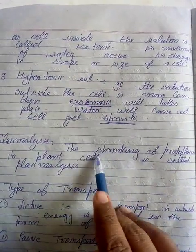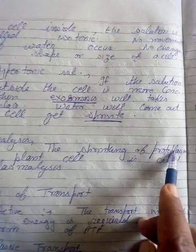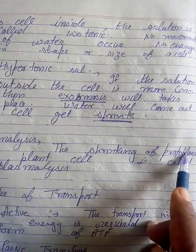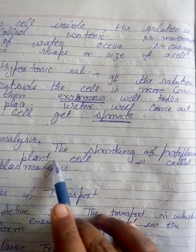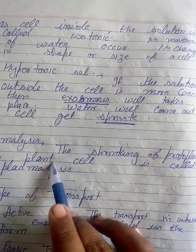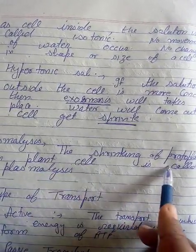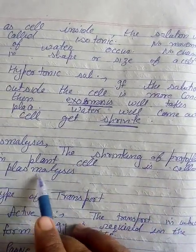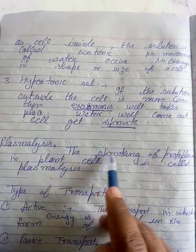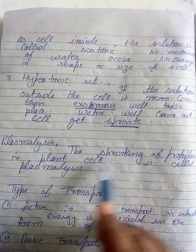Yahi process aapko yahan meine bataya. Ab next topic aata hai — plasmolysis. Plasmolysis ka matlab kya hai? The shrinkage of protoplasm. Protoplasm ka shrink hona, specially plant cell mein — us ko hum kya bolte hain — plasmolysis. Shrinkage of protoplasm in the plant cell is called plasmolysis.